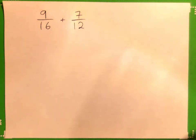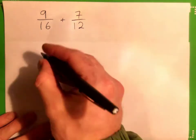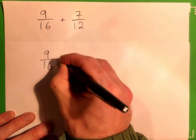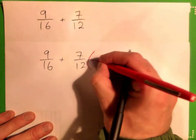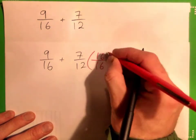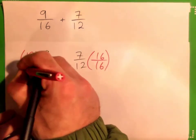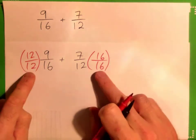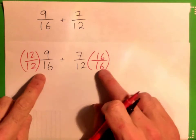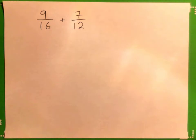Now, the temptation is just to multiply by 12 over 12 and 16 over 16. That is not a good move because it will actually get you the answer, but it's going to lead to really big numbers and a lot of work to simplify our answer. So let's not do this. Let's be smarter than this.